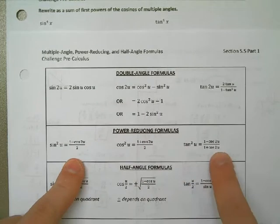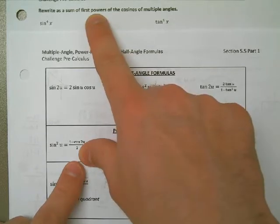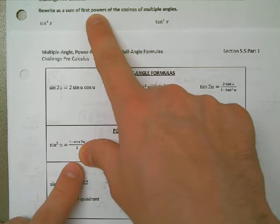But, what they say is not allowed is anything but cosine to the first power. So we're not going to have any cosine squareds. We're going to have no cosine cubes. We'll have nothing like that. So that's our task.